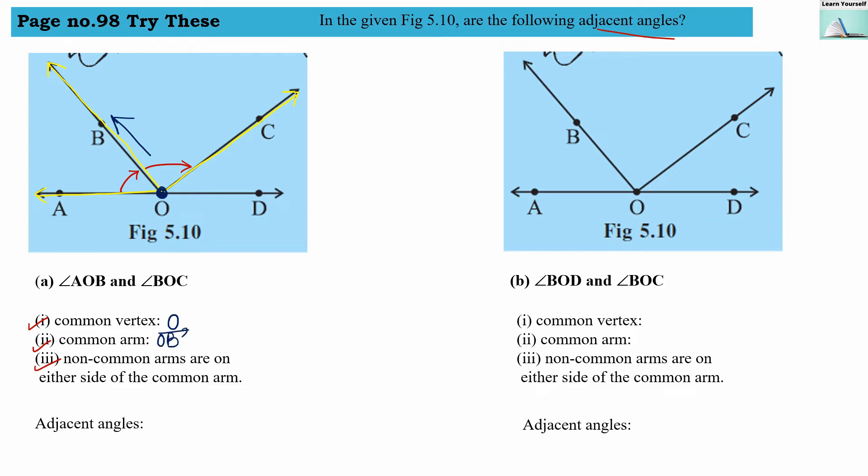Third condition: non-common arms on either side of the common arm. Yes, the non-common arms are OC and OA. They are both on either side of the common arm. So all three conditions are fulfilled. Yes, they are adjacent angles - they are adjacent to each other.